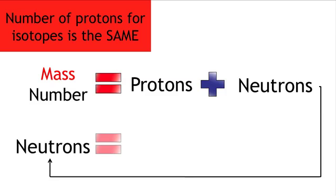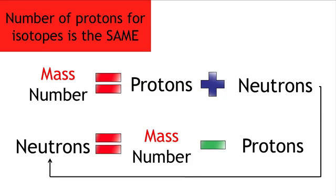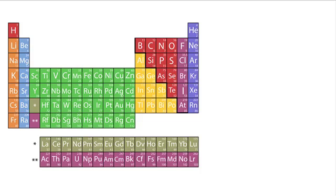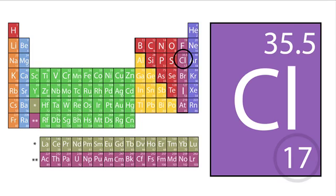Neutrons equals mass number minus protons. When we look at chlorine on the periodic table, it has an atomic number of 17. Therefore, it has 17 protons.